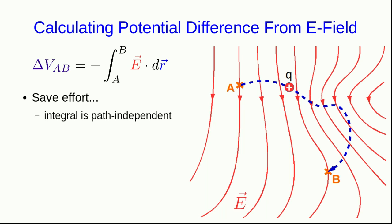And realize that you should save effort. You know that this integral has to be path-independent, and so if you have a choice, you should always try and use a path that will make the integral the easiest to do, not necessarily the actual path that a particle might be following from A to B.